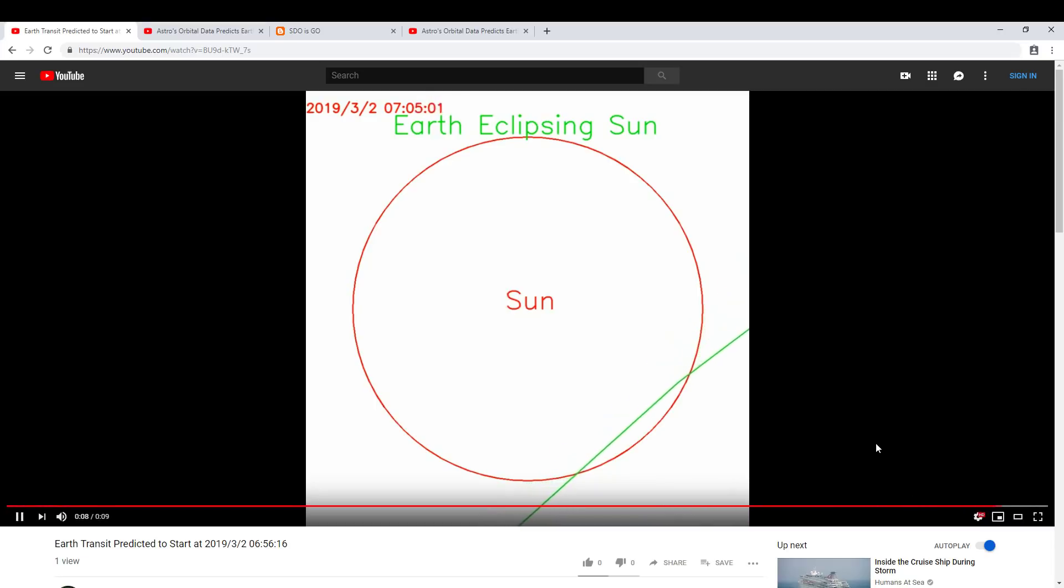Hi folks, Astronomy Live. On March 2nd at about 7 hours Universal Time, there's going to be a partial eclipse of the sun as seen from SDO, according to my SDO prediction and annotation software.